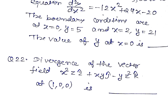Question number 22. The divergence of the vector field x square z i cap plus x y j cap minus y z square k cap at point 1 0 0 is.